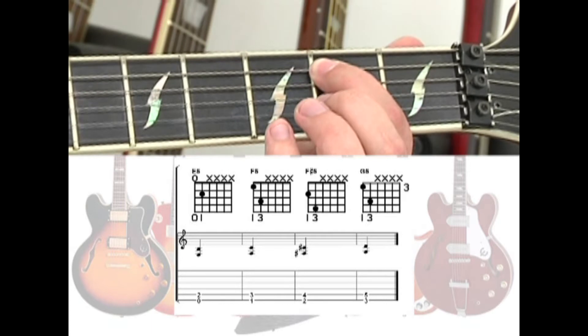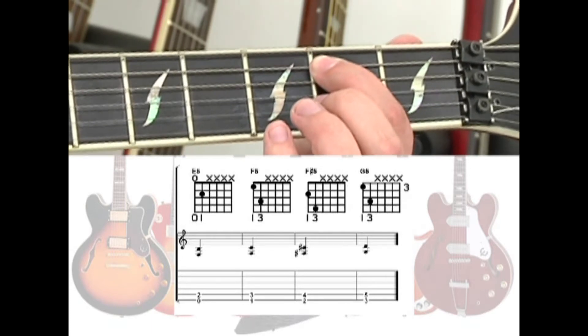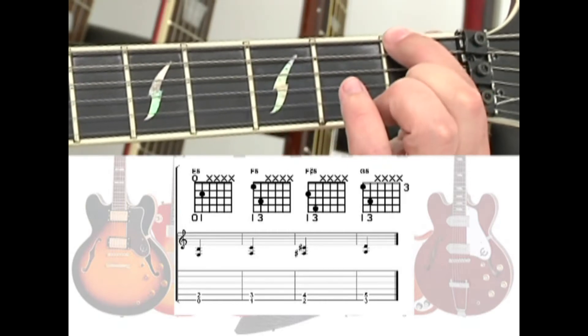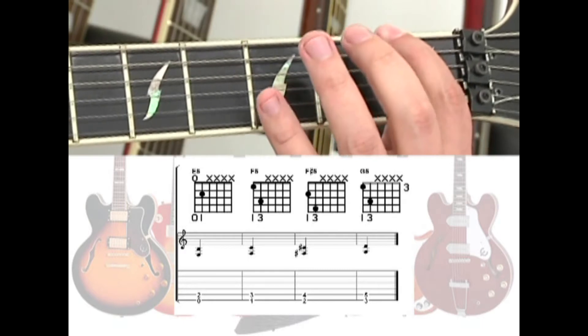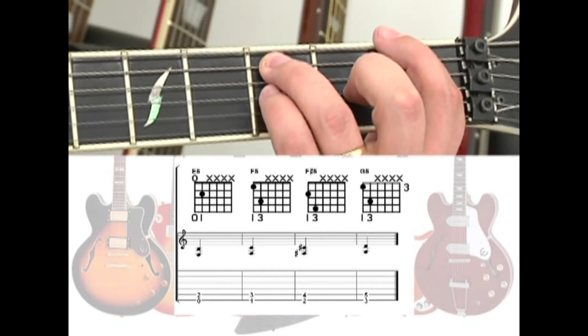Power chords are movable chord shapes. From E5, you can move everything up one fret to play an F5. Place your index finger on the 6th string 1st fret along with your ring finger on the 5th string 3rd fret and strum both strings.